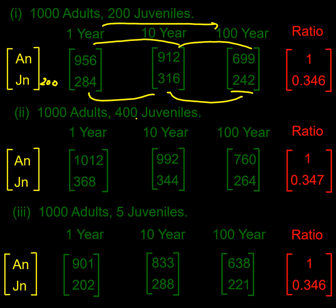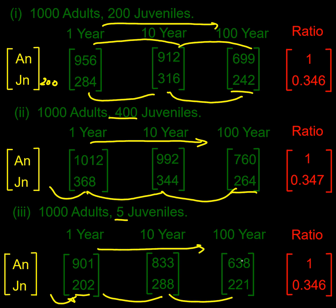What happens if I started with 400 juveniles? Well, 400 juveniles next year becomes 360, in 10 years 340, and 100 years down to 260. The adult population is dropping slowly again. What if I only started with 5 juveniles? The number rises to 200, went up to 280 over 10 years, and down to 220 over 100 years. Again the adults are dropping.